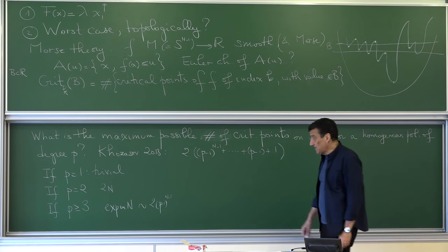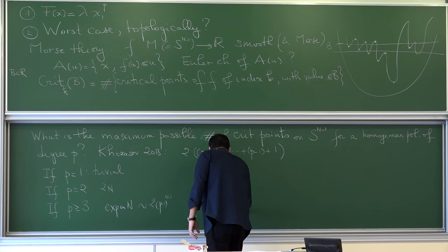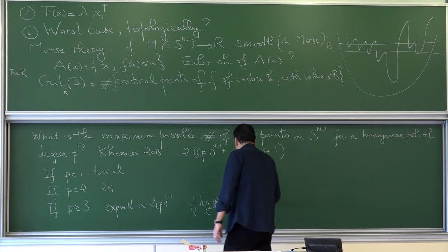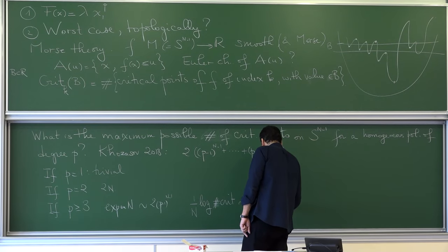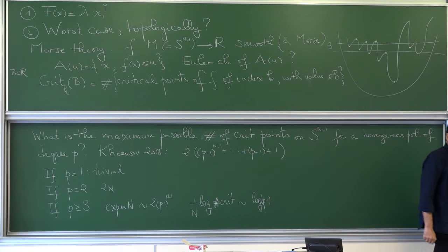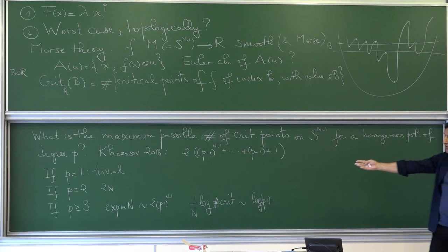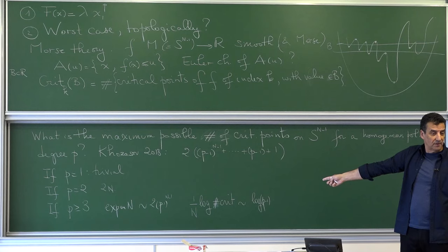So the complexity — if you take (1/N) log of the number of critical points — behaves like log(P-1). That just tells you: beware, even a function which looks very simple can be extremely complicated. Here you take a homogeneous polynomial and you can find one which is terrible.